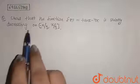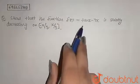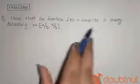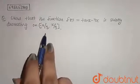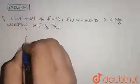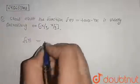It is given: show that the function f(x) = tan(x) - 4x is strictly decreasing on (-π/3, π/3). So it is given that my f(x) is tan(x) - 4x.